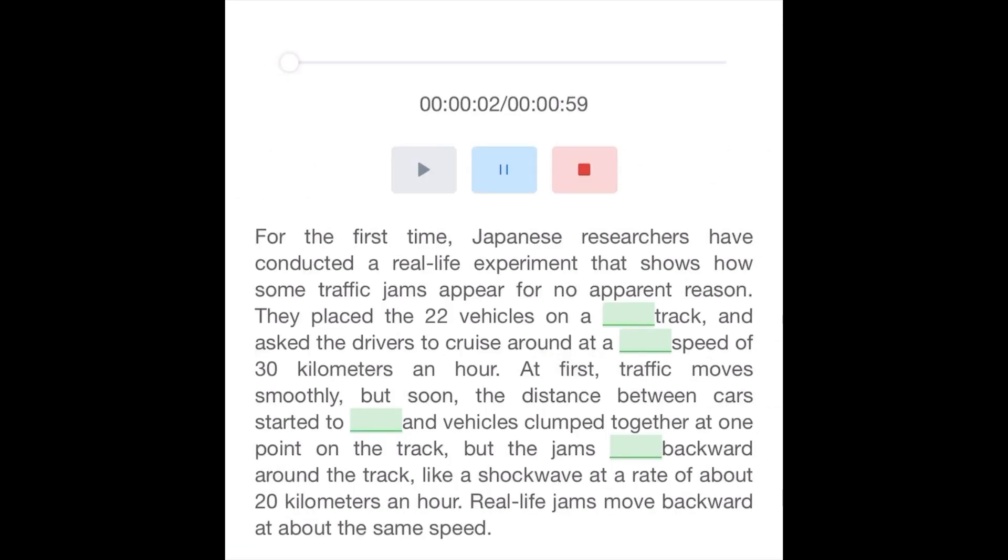For the first time, Japanese researchers have conducted a real-life experiment that shows how some traffic jams appear for no apparent reason. They placed 22 vehicles on a single track and asked the drivers to cruise around at a constant speed of 30 kilometers an hour.